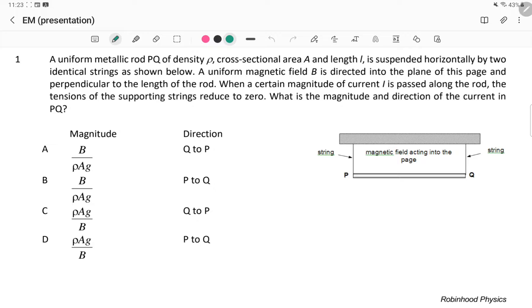Normally we expect that the tension will be equal to the weight because this rod is suspended, the combined tension in both strings. But now we want the tension to be zero, which means there must be some other force supporting the weight of the rod.